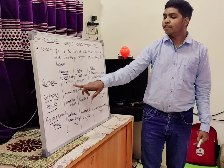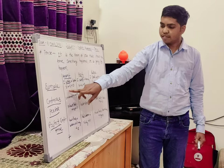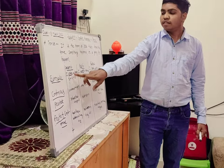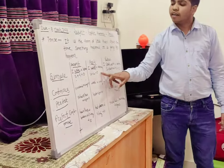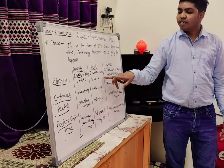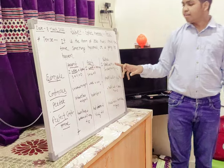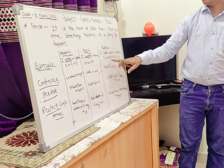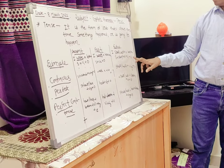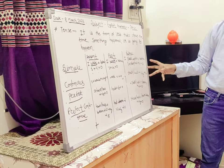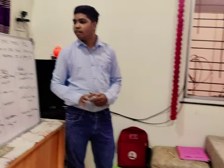In simple present tense, for example: 'I write a letter.' Here the subject is 'I', the verb is 'write', and 'a letter' is the object. In past tense, we write 'I wrote a letter' — using the second form of the verb. In future tense, we use 'shall' or 'will', for example: 'I shall write a letter.' This is the future tense example, and it is the most important part of our tense.